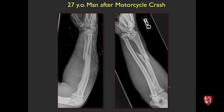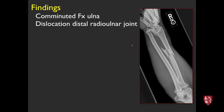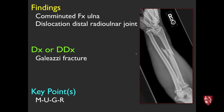27-year-old man after a motorcycle crash. There's a fractured radius along with dislocation of the distal radioulnar joint. This is a Galeazzi fracture. Using the mnemonic: Monteggia goes with the ulna, Galeazzi with the radius. Remember the ring concept — a fracture with an associated dislocation.